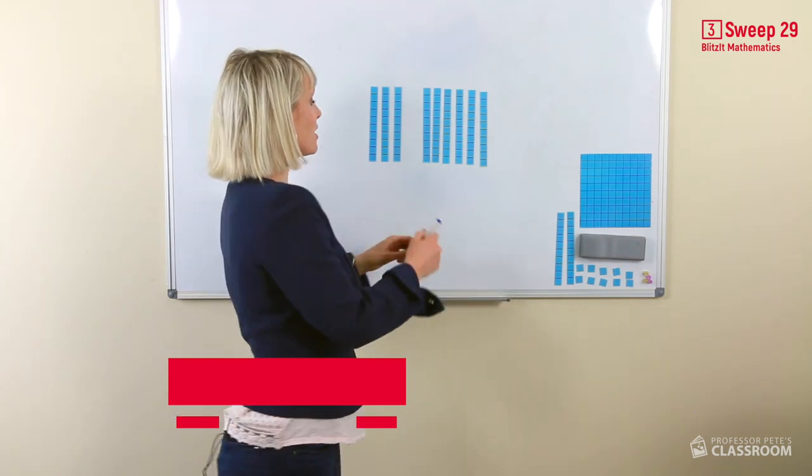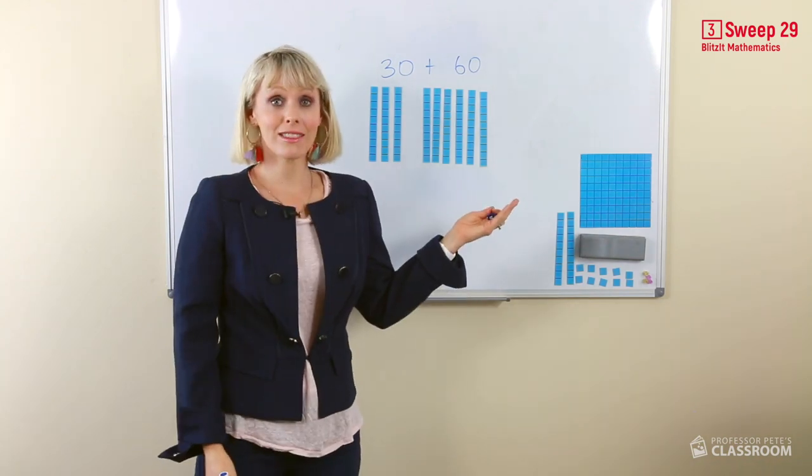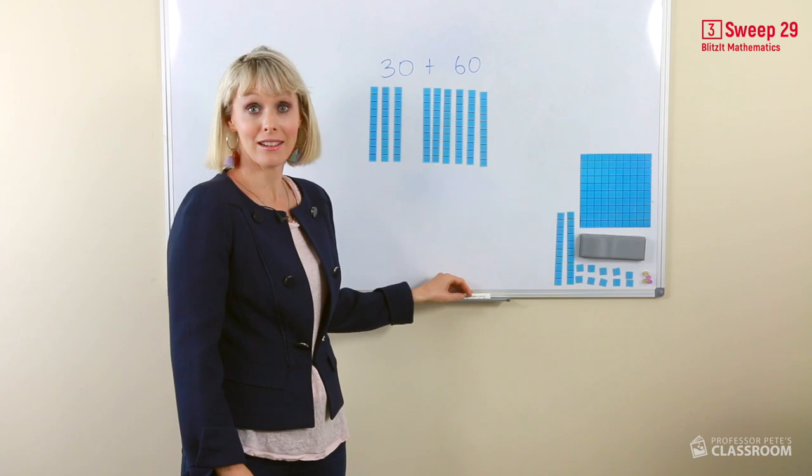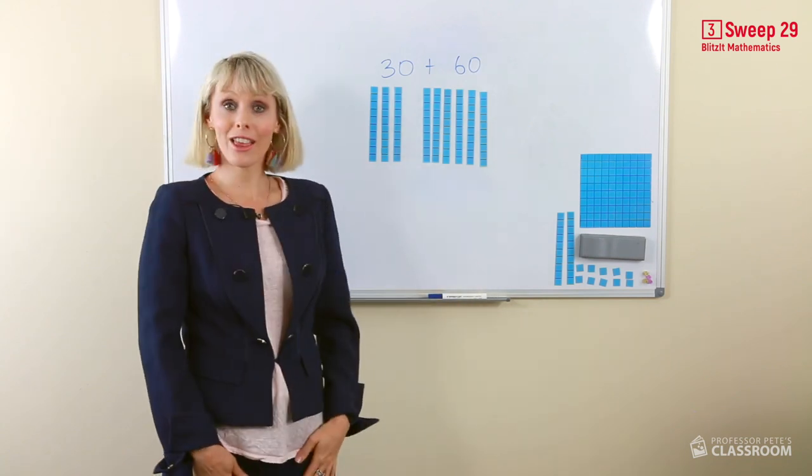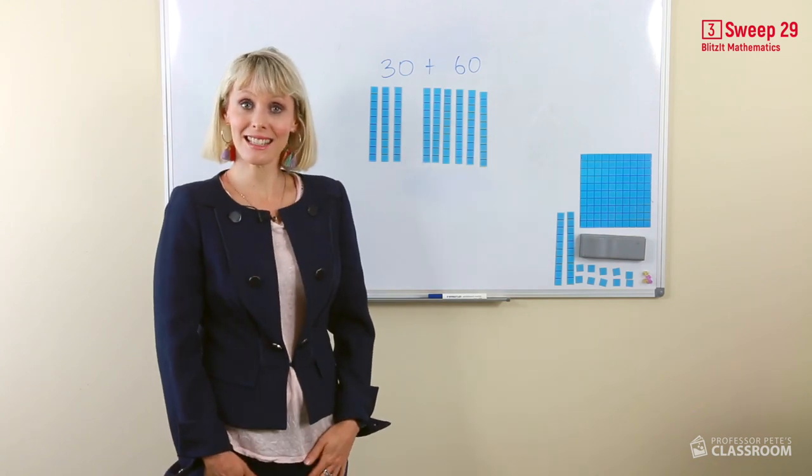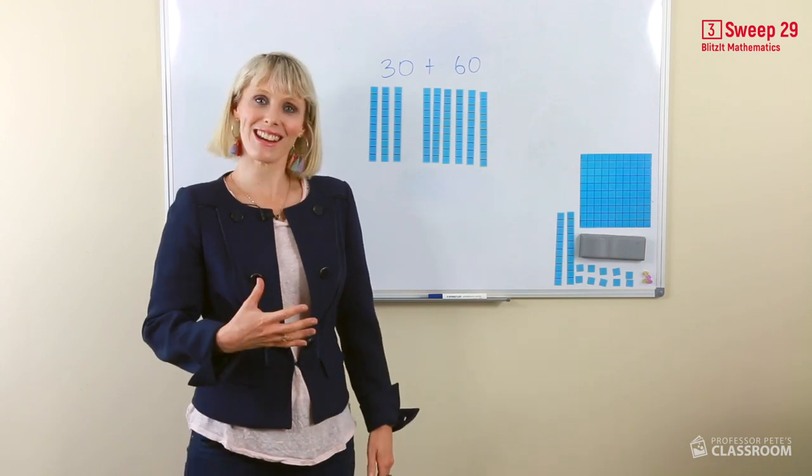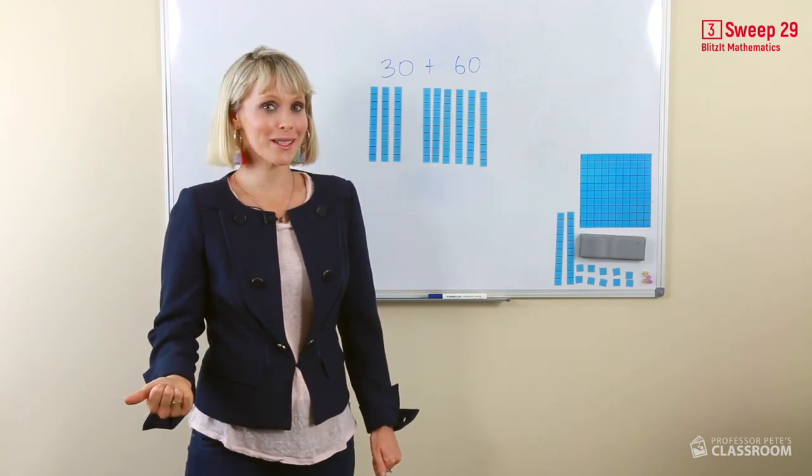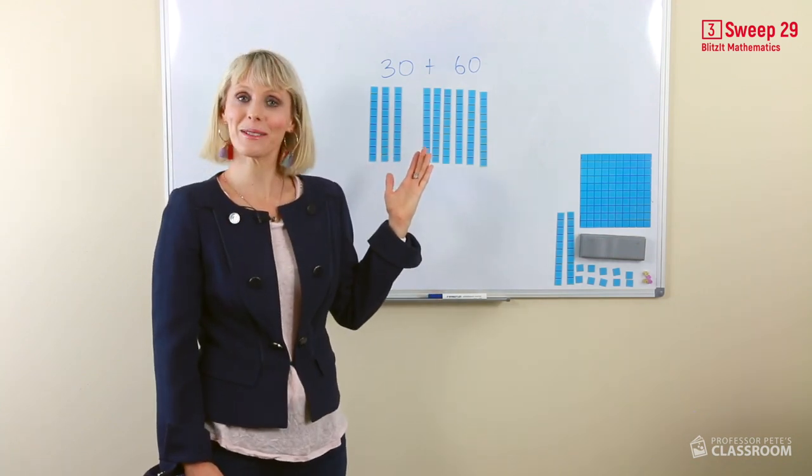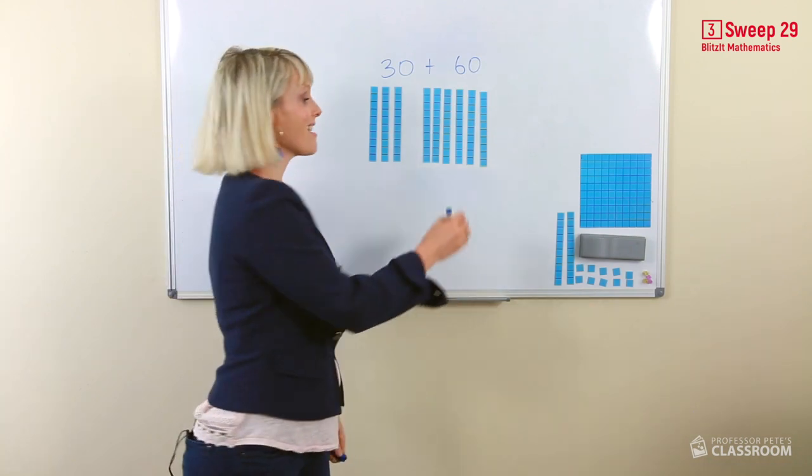Here we have 30 add 60. You can see that we don't have any ones to add, so we can do this in our head. Now, another way of saying 30 is three tens. Another way of saying 60 is six tens. We know from our addition number facts that three and six equals nine. So three tens and six tens equals nine tens, which is 90.